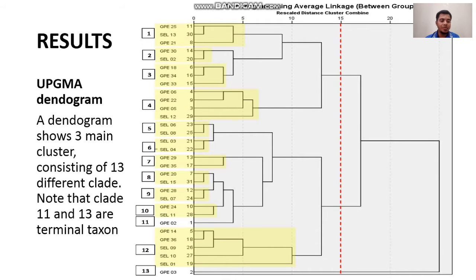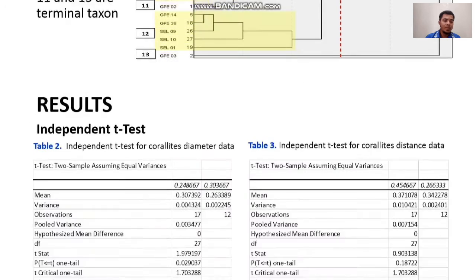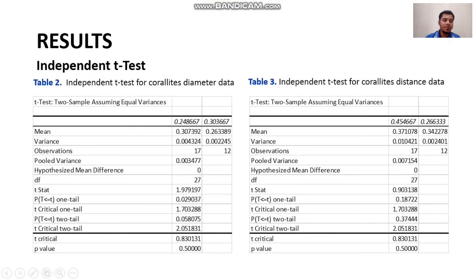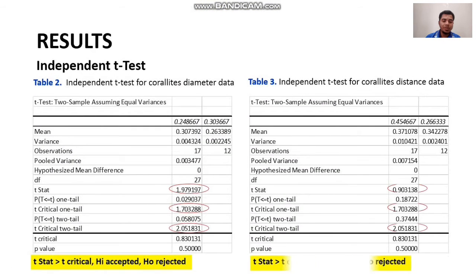As we can see, there are 2 clades — clades 11 and 13 — that form terminal taxa. The independent t-test results prove a significant difference within the data.